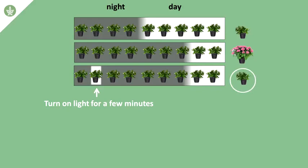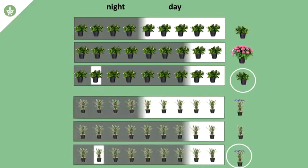On the other hand, if you take a long day plant and keep it in conditions of short day, these are conditions which would inhibit flowering, but you turn on the lights in the middle of the night, again, just for a few minutes, you can induce a long day plant to flower under conditions of short day.